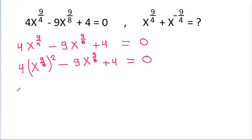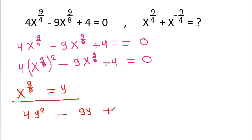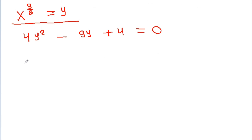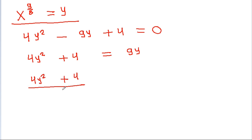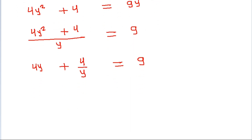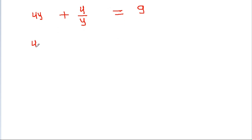If we take x power 9 by 8 equal to y, then we get 4y squared minus 9y plus 4 is equal to 0. Dividing through, 4y minus 4 by y equals 9, which gives us 4 times (y plus 1 by y) equals 9.